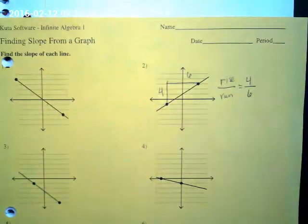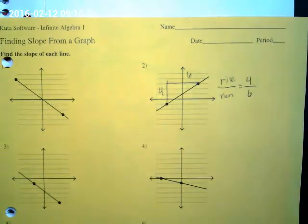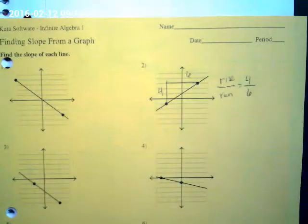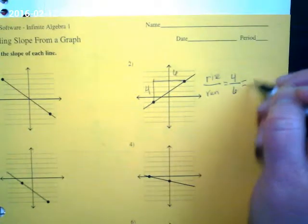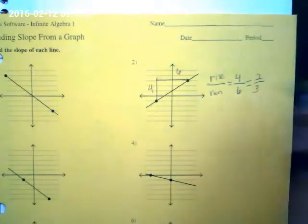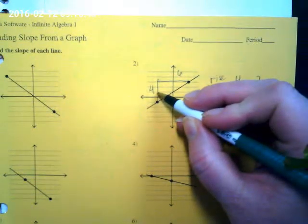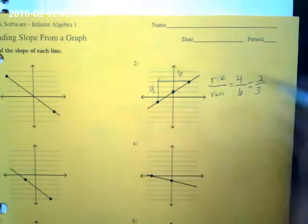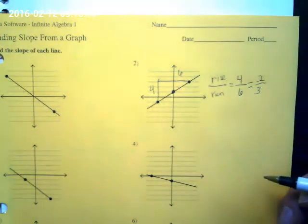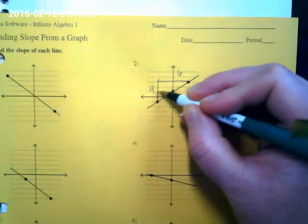Four over six. And when you look at that, you guys are thinking, well, that looks like it could be reduced, aren't you? What could we reduce it to? Yeah, two over three. And now watch, let's go back to our graph here. If I go up two and over one, two, three, there's another point on the line, isn't there? So I could have risen up just two over three.